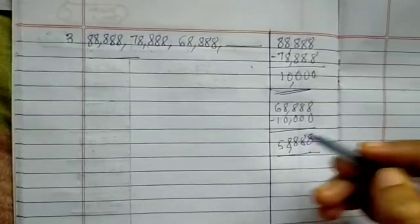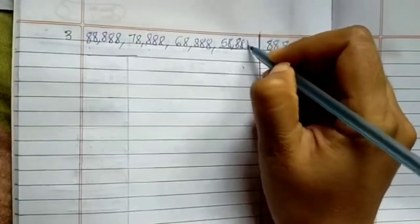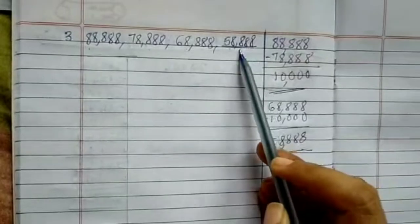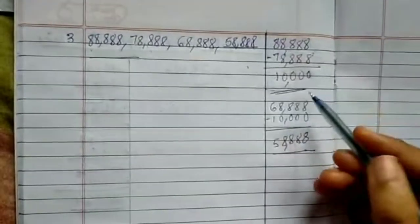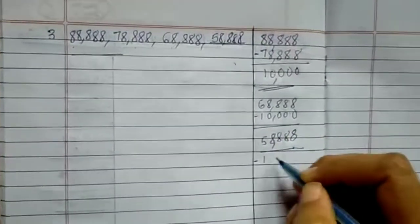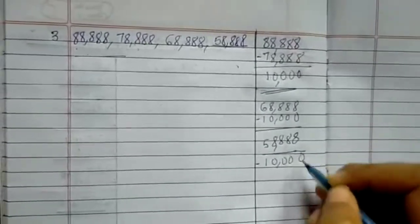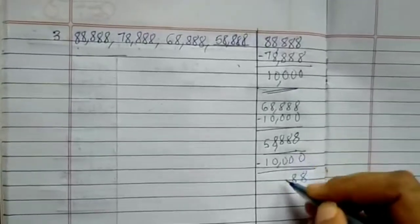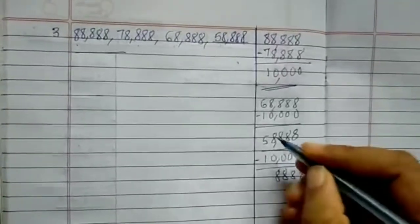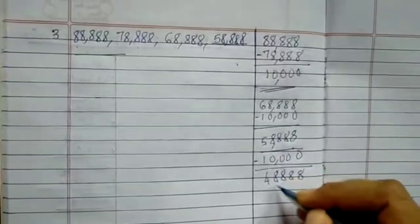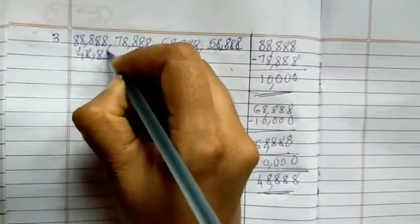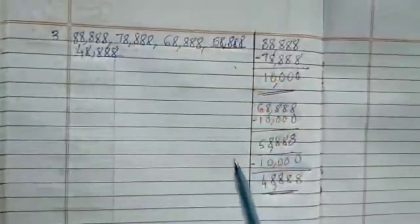You can see the number is going on decreasing by 10,000. Now for the last one, 58,888 minus 10,000: 8 minus 0 is 8, 8 minus 0 is 8, 8 minus 0 is 8, 8 minus 0 is 8, 5 minus 1 is 4. So the answer is 48,888.